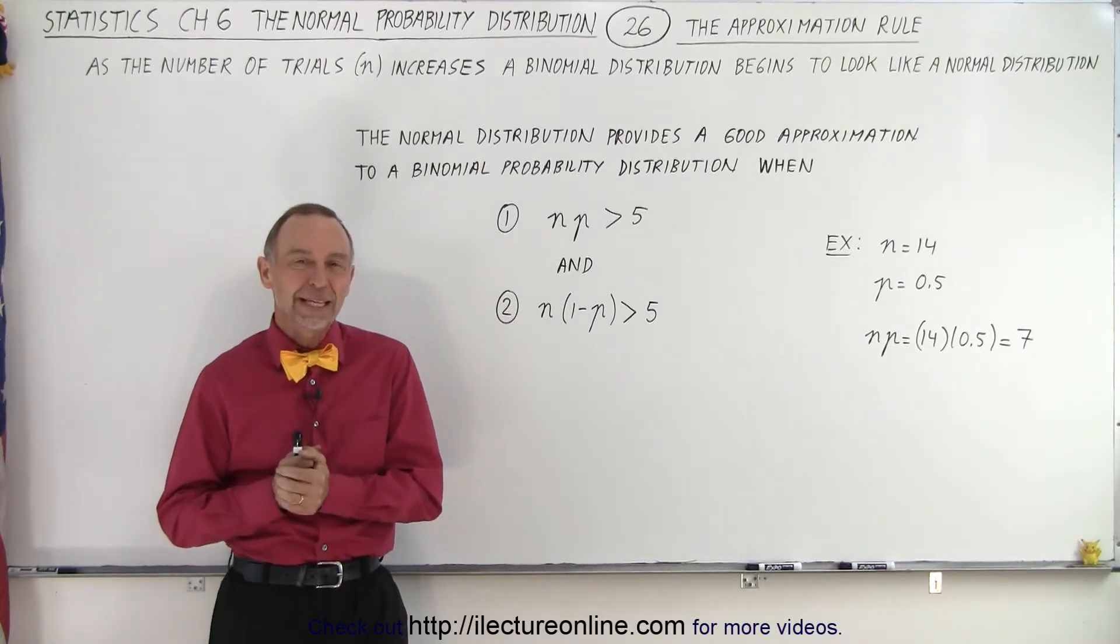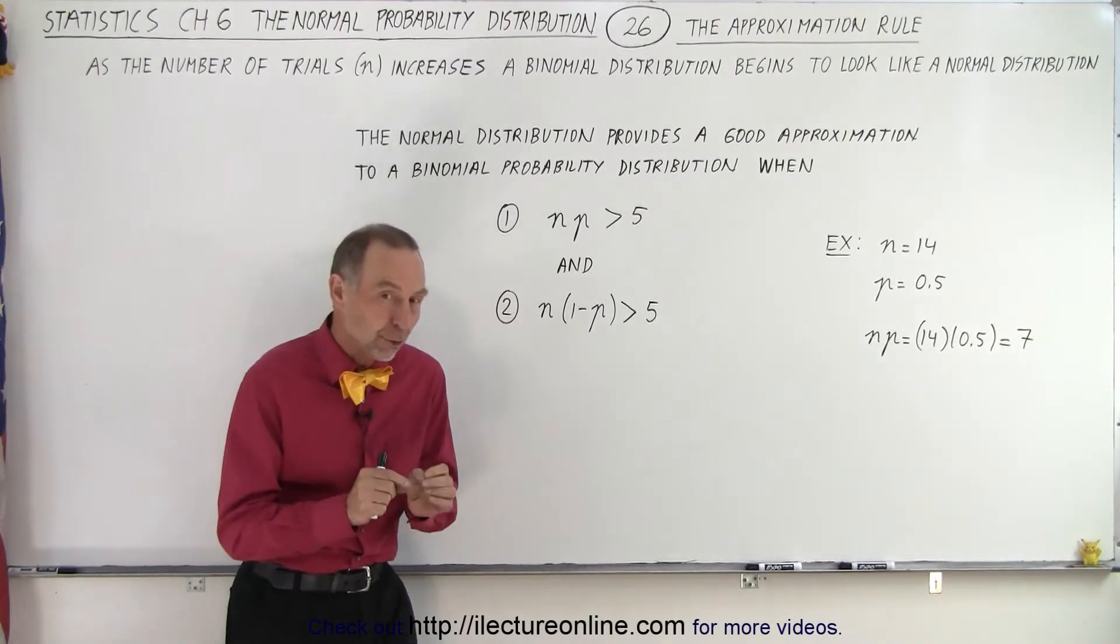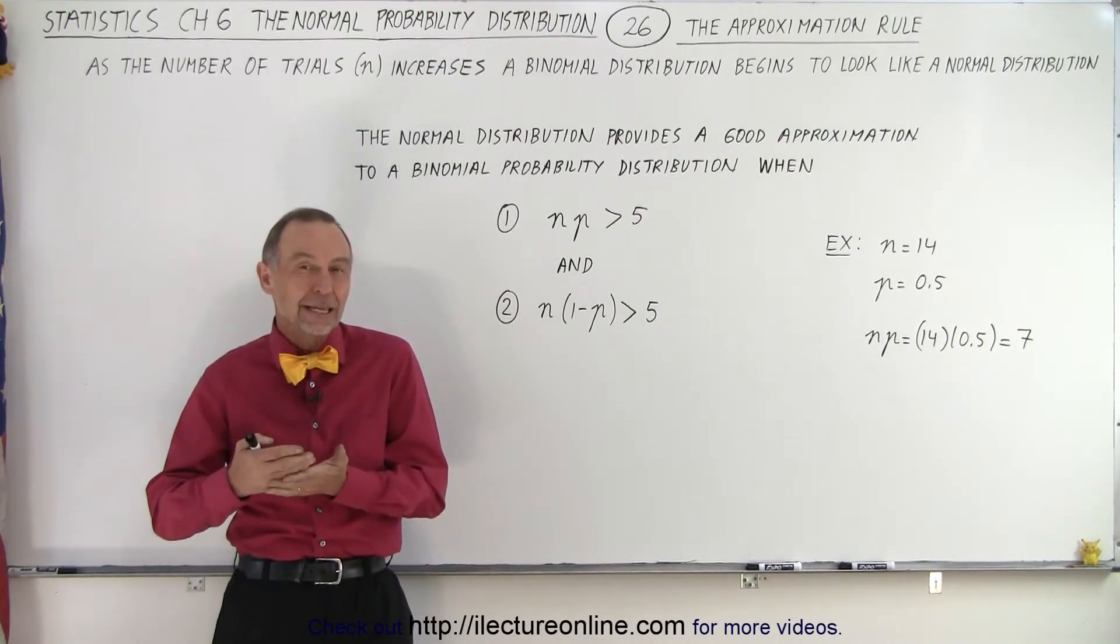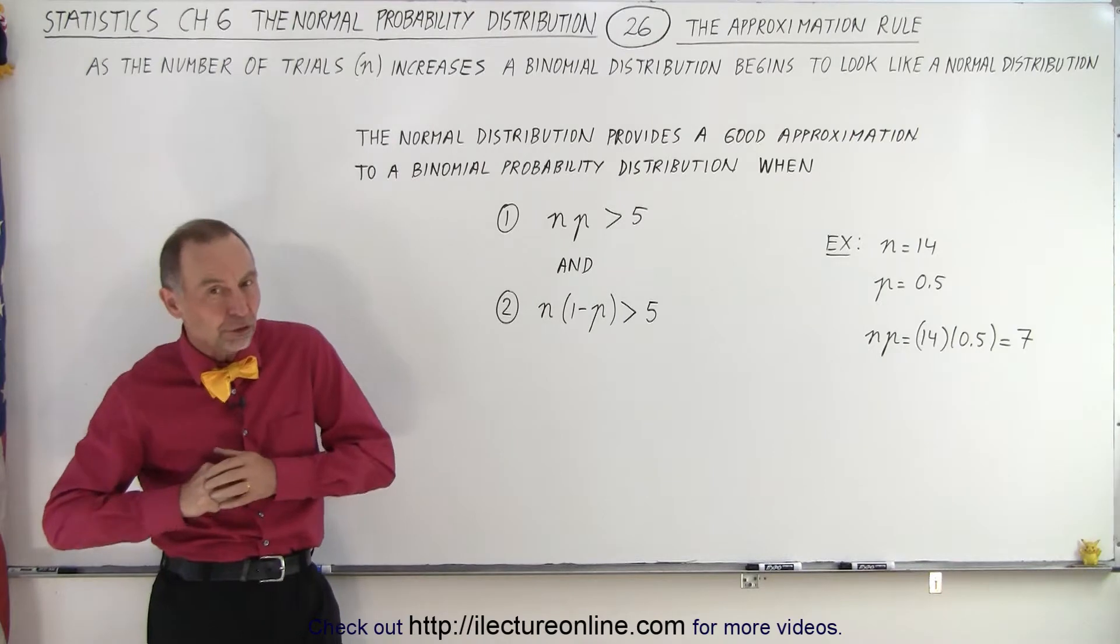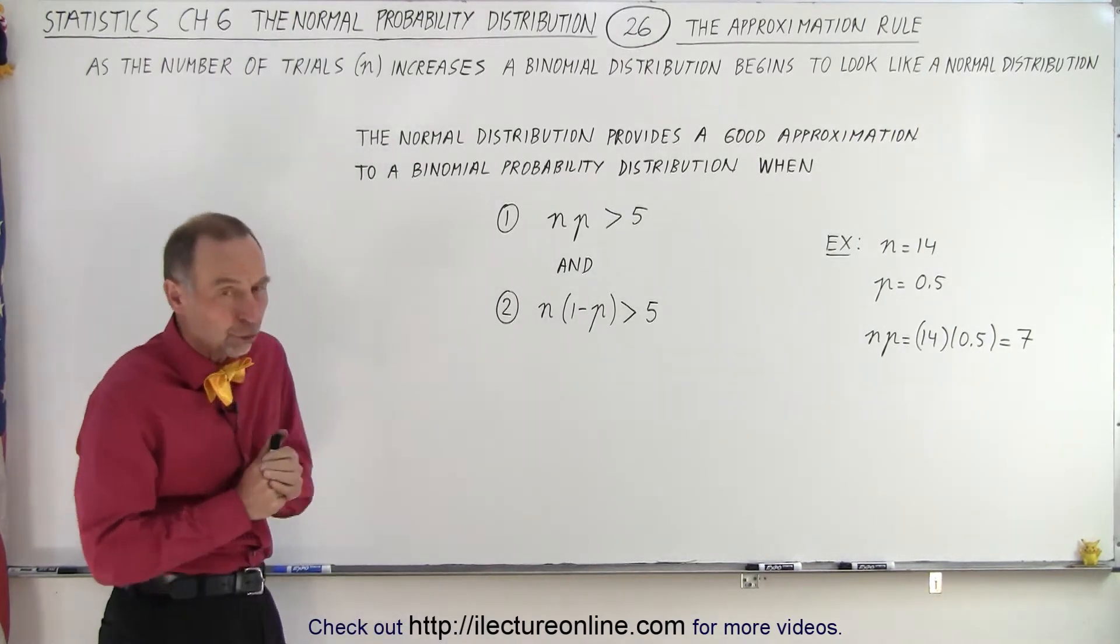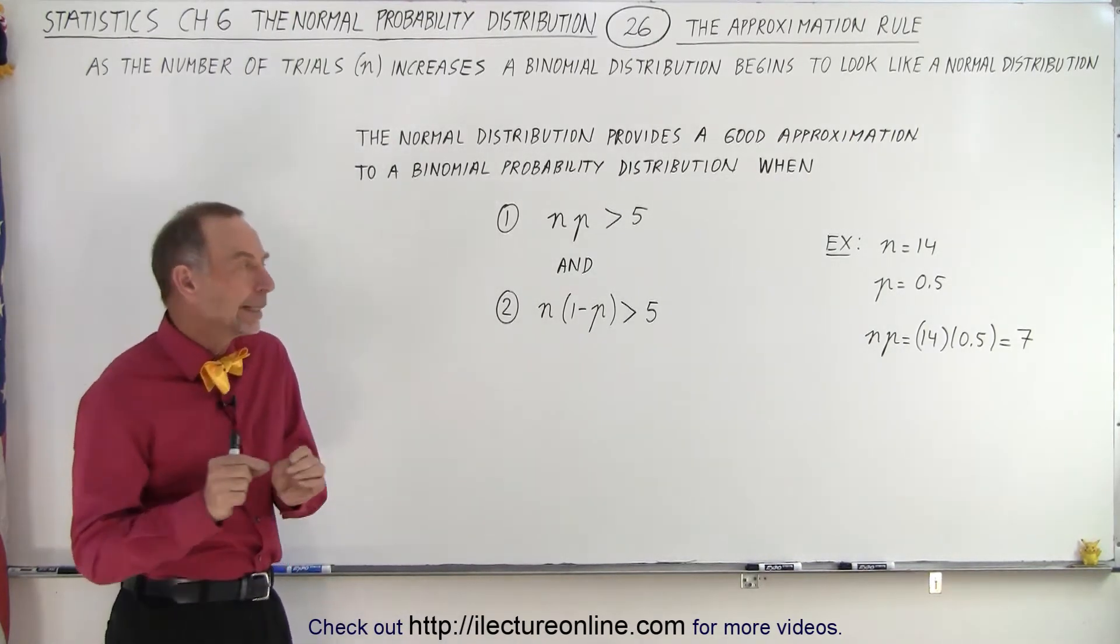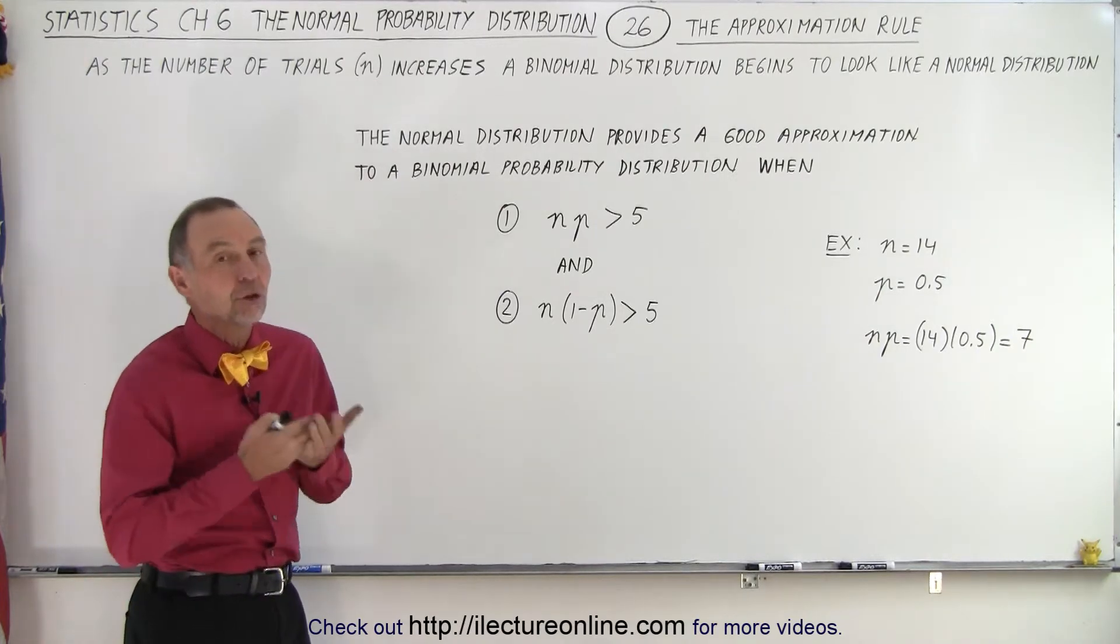Welcome to I Lecture Online. If we're going to use the normal distribution to calculate the probability for a particular outcome in a binomial probability distribution, we want to make sure that the number of trials is large enough.